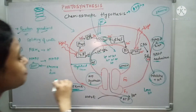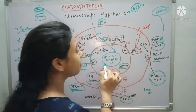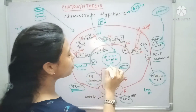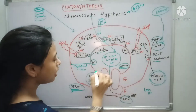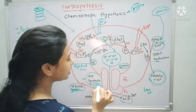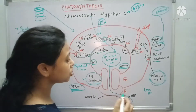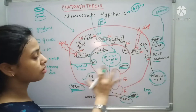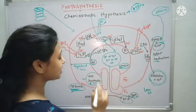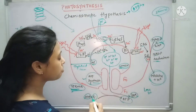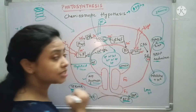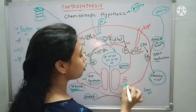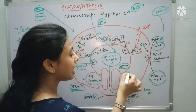The proton gradient has now been formed. This proton needs to be released outside so the gradient equalizes with the stromal region. Hydrogen ions are released through the ATP synthase complex. Three hydrogen ions are released, and during this release, conformational changes occur in the complex — ADP binds with a phosphate molecule and is converted into the high-energy ATP molecule.